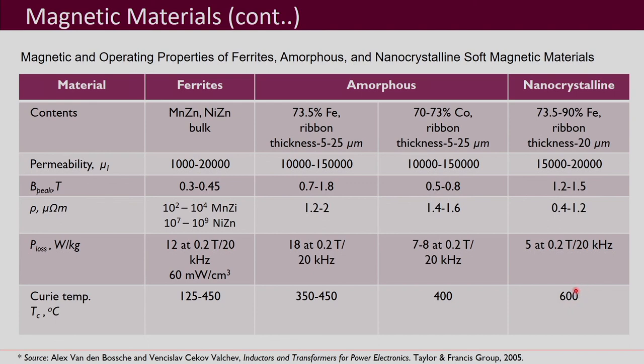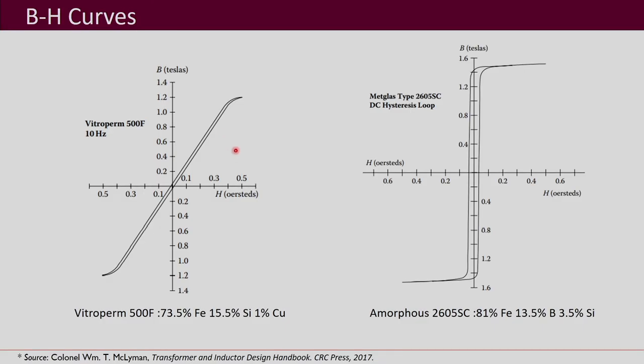These are the important parameters to look for when comparing which material is more suitable for your design of inductors and transformers. Depending on the material, BH curves can look very different. Different manufacturers make magnetic materials from different compositions of elements, and based on that the BH curve obtained is also different.